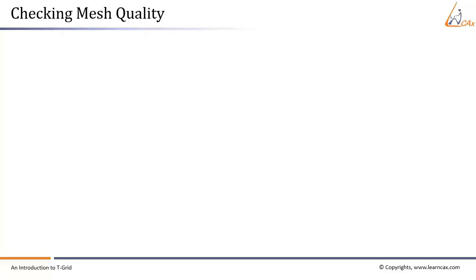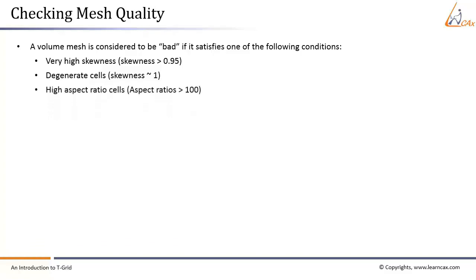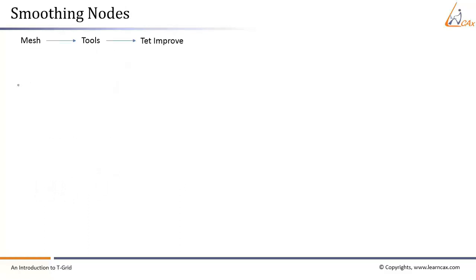The following Volume Mesh Quality Criteria should be satisfied before saving the final mesh. A volume mesh is considered bad if it has very high skewness (greater than 0.95), degenerate cells (skewness equal to 1), high aspect ratio cells (aspect ratio greater than 100), or negative volumes. Cell quality can be improved by improving tri-tet mesh quality, moving mesh nodes, and removing slivers. The Tet Improve panel allows operations such as smoothing nodes, swapping faces, and improve. Navigate via Mesh > Tools > Tet Improve.